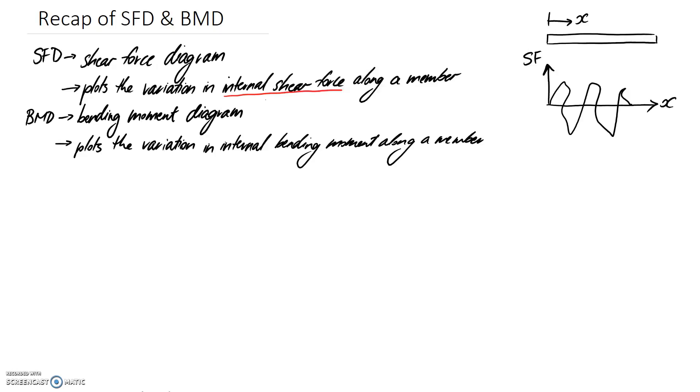Bending moment diagrams, the abbreviation is BMD, plot the variation in the internal bending moment along the member. Again, to set it up, we've got the x direction which tells us the distance along the beam.